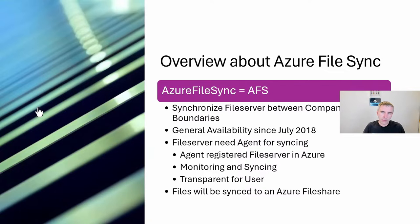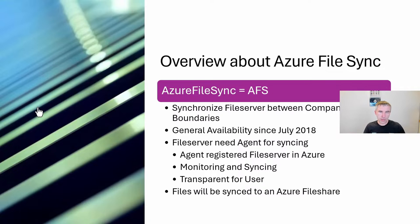For this, you need an agent, which is responsible for the synchronization between your files and an Azure File Share. This is fully transparent for the user. When you have different file server solutions in different environments, you can enable and set up an Azure File Share in Azure, install the agent on all your file servers in different locations, connect the agents to the Azure File Share, and start synchronization between all these different branch offices. All your files will be directly stored on the Azure File Share solution.